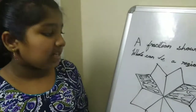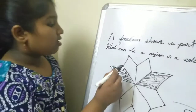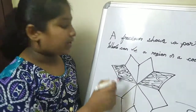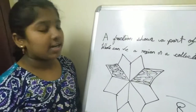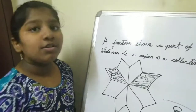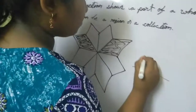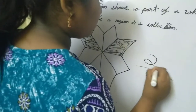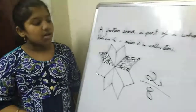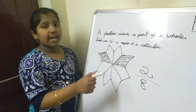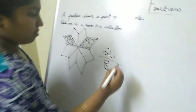Now we will see how many parts are shaded. Let me count: 1, 2. Two parts are shaded. So 2 will come in the numerator. Therefore, 2 by 8 of the flower are shaded.